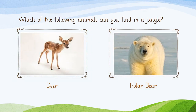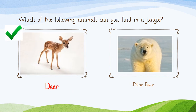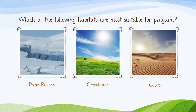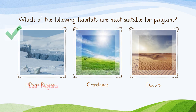Which of the following animals can you find in a jungle? Do you find a polar bear in a jungle, or do you have a chance of seeing a deer in a jungle? The correct answer is you may find a deer in a jungle, because a polar bear is only found in very cold regions where there are no trees and obviously no forests. Another question: which of the following habitats is most suitable for penguins? The correct answer is that penguins like to live in the polar regions.